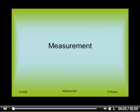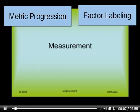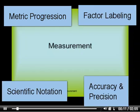In terms of measurement, we'll discuss four main aspects. First, metric progression. Second, factor labeling. Third, scientific notation. And fourth, accuracy and precision.